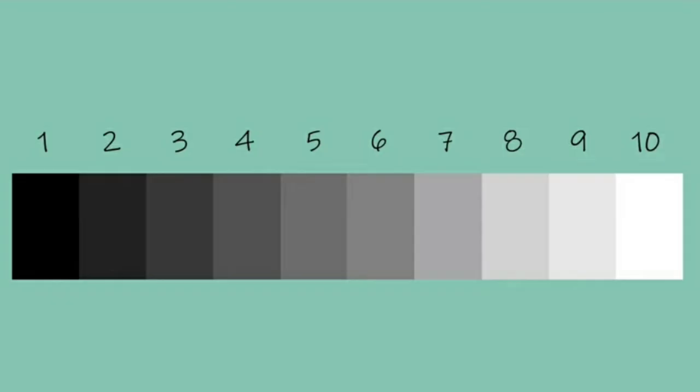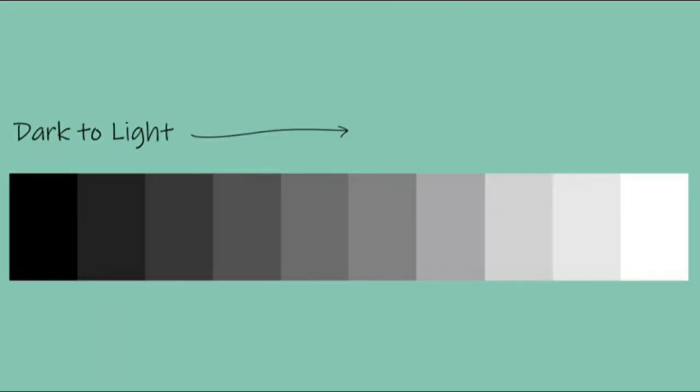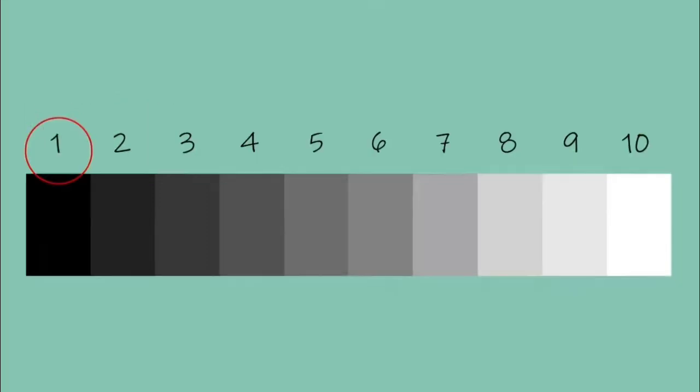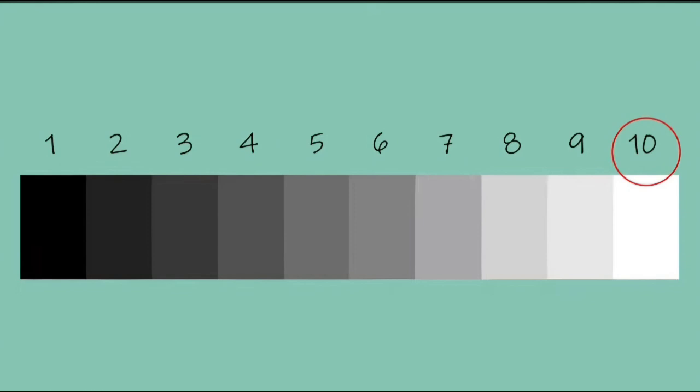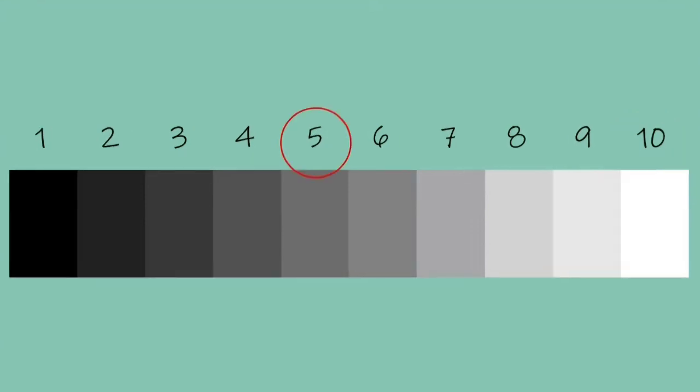Values can be better understood when they are visualized as a scale. I like working with a value scale from 1 to 10, dark to light. The darkest value is 100% black and the lightest value is 100% white, and the halfway value between these two extremes is grey.